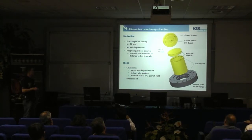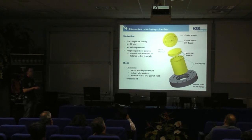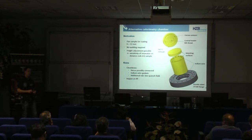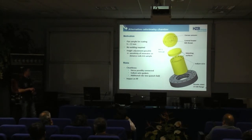A height adjustment is possible if we have different flanges available, allowing us to vary the distance between the sample and the rods, which is very sensitive. The risk is that in the baseline design the vacua are separated — the calorimetry vacuum and the vacuum inside the cavity. With this demountable design, we are not really sure that these vacua are still unconnected, so we have to investigate that, as well as the impact on the RF system of these edges.